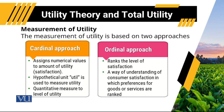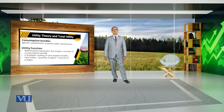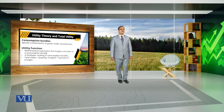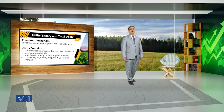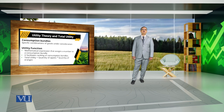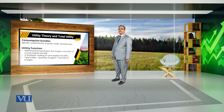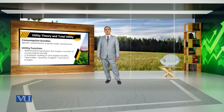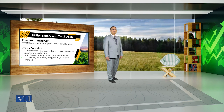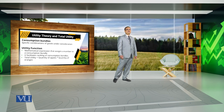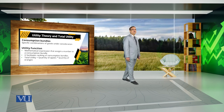But later researchers found that utility depends upon the quantity of other commodities too. Since the utility of a consumer depends on multiple commodities, we usually consider a consumption bundle. A consumption bundle contains a specific combination of different commodities. For example, a consumer might get satisfaction by using apples and oranges simultaneously, and the combined utility from both is the bundle against which the consumer derives utility.